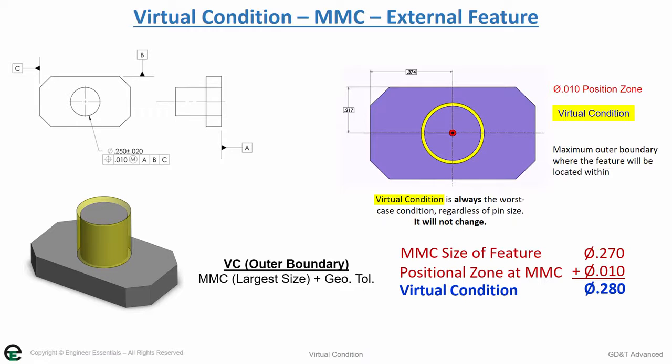This helps us calculate the hole size that would assemble, meaning that we'd have to have a hole that's always larger than .280 to always ensure that the part would fit into it.